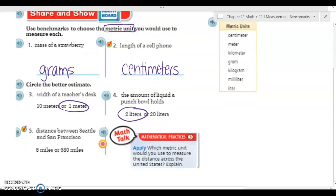All right, number five, distance between Seattle and San Francisco. Six miles or six hundred and eighty miles? Well I know a mile is how far I can walk in twenty minutes, and I know that Seattle and San Francisco are really far apart. So you're not gonna be able to walk there in six miles, so six hundred and eighty sounds like the correct answer.